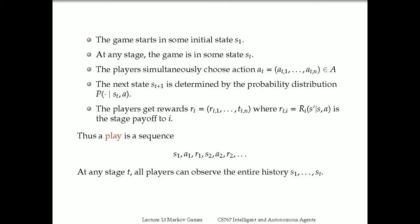The play of the Markov game is almost the same as for the MDP. It consists of an infinite sequence of states, actions, and rewards: S_1, A_1, R_1, S_2, A_2, R_2, and so on. At any stage t, all players can observe the entire history S_1 up to S_t—what has already happened is assumed to be observable by the agents.